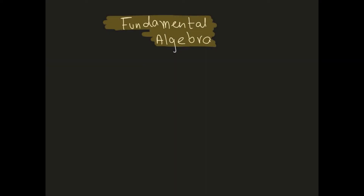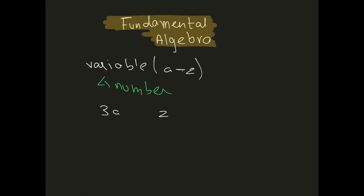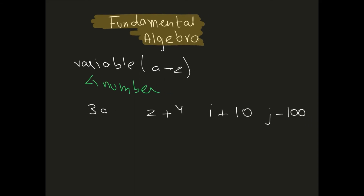In this video I'll be going over fundamental algebra. In algebra, variables are basically letters — any letter from A to Z is called a variable. Variables are used to represent numbers, and they can be any number from negative infinity to positive infinity. For example, 3a, z plus 4, i plus 10, or j minus 100 — the letters a, z, i, and j are all variables which can represent any number.